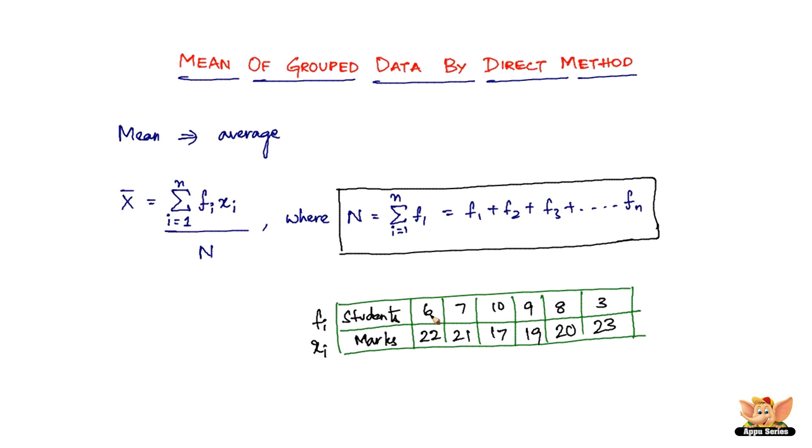In simple words, you just have to multiply the frequency, that is the number of students, times the marks that they have obtained and sum it all up, and then divide it by capital N, which is nothing but the sum of the frequency. So this is how you find the mean of grouped data.